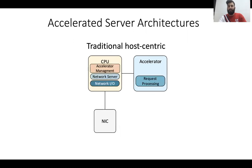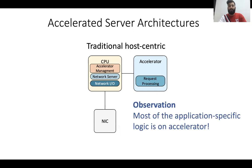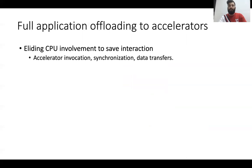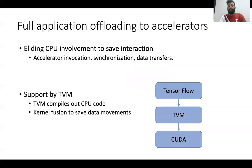Going back to our accelerated application, we've observed that most of the application-specific logic is running on the accelerator, and offloading the full application to accelerators is very important because we want to eliminate the CPU interaction with the accelerators, such as accelerator invocation and data transfers. This can be done by using the state-of-the-art TVM optimization compiler for neural networks, which compiles out the CPU code and does optimizations like kernel fusion to save data movements between the CPU and the accelerator.